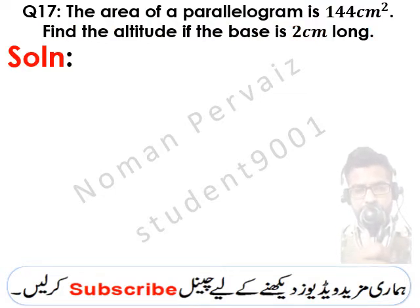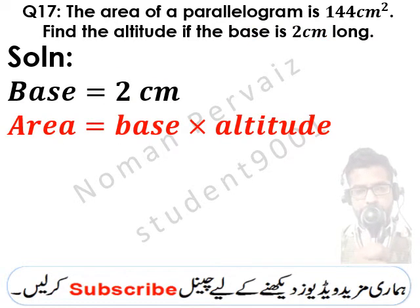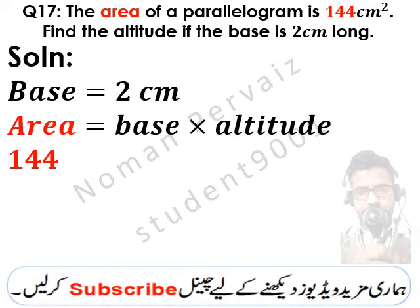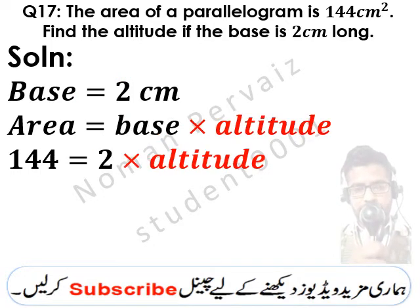The solution: the base is equal to 2 cm. The area of a parallelogram is equal to base multiplied by altitude. The area is 144 cm squared, the base is 2 cm, and we need to find the altitude.